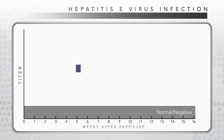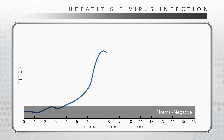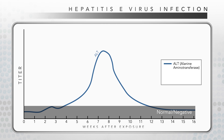Incubation ranges from 15 to 60 days following exposure, with an average of 40 days. Liver enzyme elevation, shown in blue and labeled ALT for alanine aminotransferase, usually occurs four to five weeks after exposure to HEV, and persists for 3 to 13 weeks.